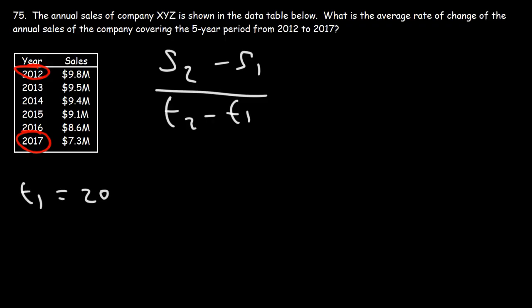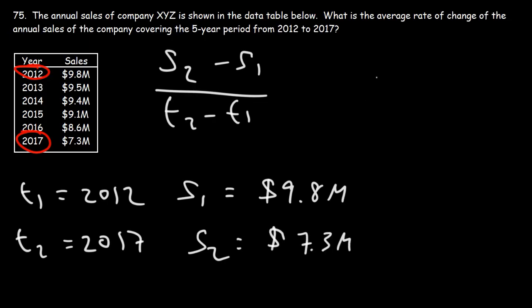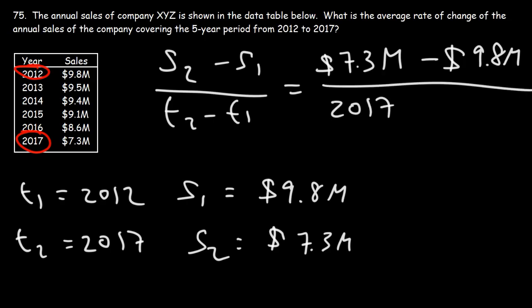So our T1 value is 2012. Our S1 value is the sales during that year. That's 9.8 million. T2 is 2017. And the sales for that year is 7.3 million. So let's plug in what we have. If S2 is 7.3 million, S1 is 9.8 million. T2 is 2017 minus T1.